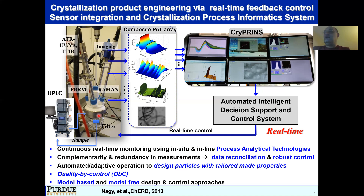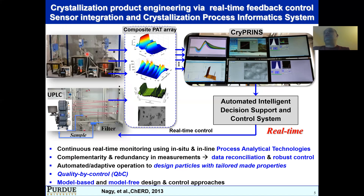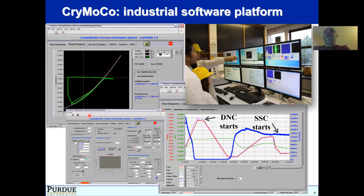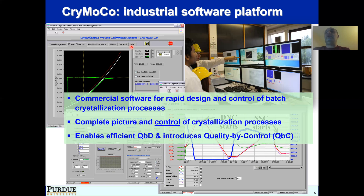This platform enables, through the complementary and redundancy of measurements, data reconciliation and robust control approaches, implementing a model-based and model-free quality-by-control approach that leads to particles with tailor-made properties. It can be equally applied for batch or continuous crystallization platforms, whether cascade stirred tank crystallizers or plug flow crystallization vessels. The entire platform is integrated in a user-friendly interface. The crystallization process informatic system, CryPrince or CryMoco, is a commercial platform available for easy use and rapid design of crystallization platforms, enabling efficient quality-by-design and our novel concept of quality-by-control.